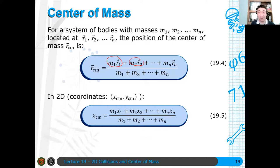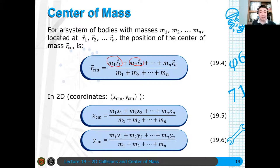And for y coordinates, ganoon lang din. m₁y₁ plus m₂y₂ - you just multiply the mass with the position vector, divided by the total mass of the system, para malocate yung center of mass.